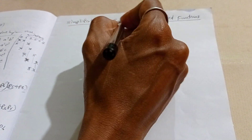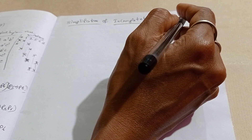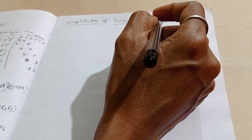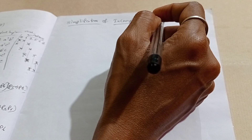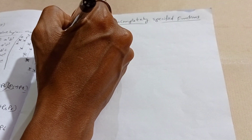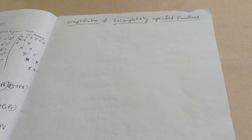Simplification of incompletely specified functions: given an incompletely specified function, proper assignment of values to the don't care terms is necessary in order to obtain a minimum form of a function. Wherever there is a don't care, we need to place the proper value — whether it should be 1 or 0. This is what the incompletely specified function means.